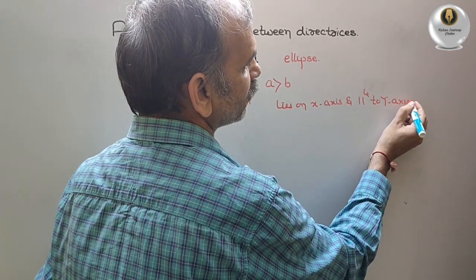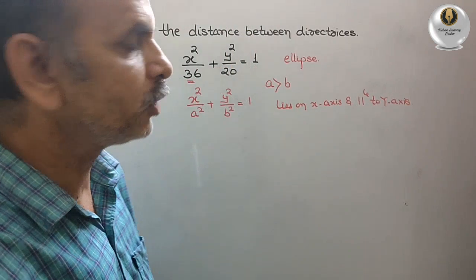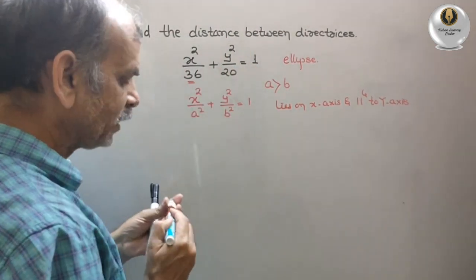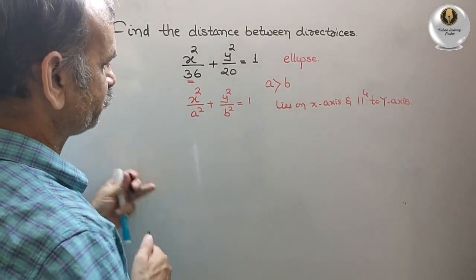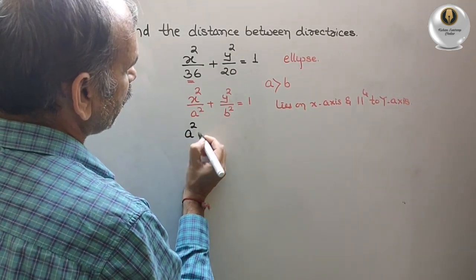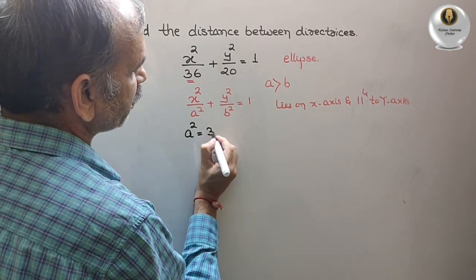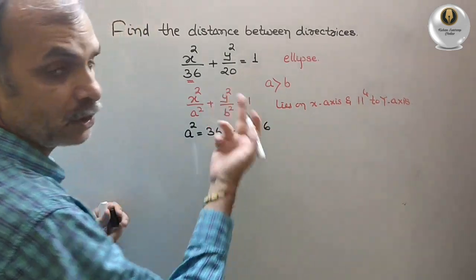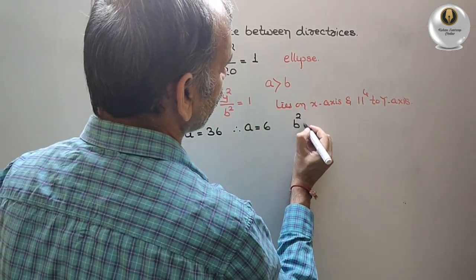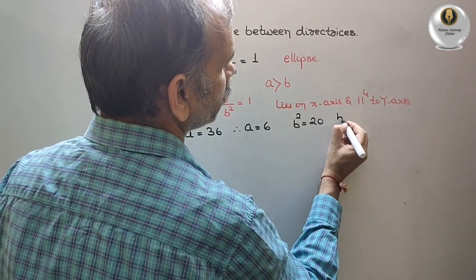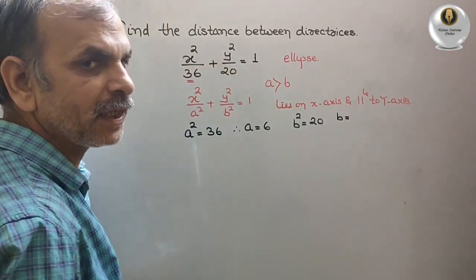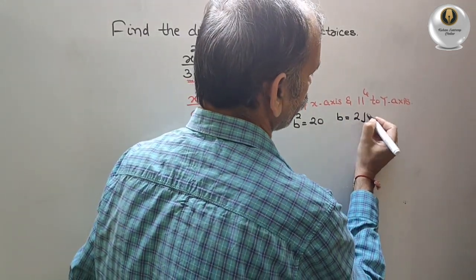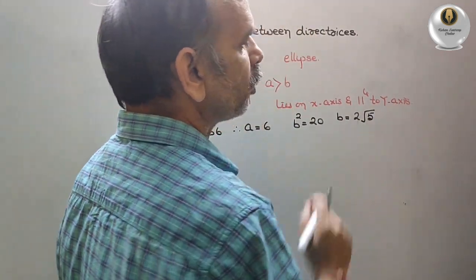Here, if you see, a is 6. We know that a² = 36, therefore a = 6. Here you can see b² = 20, so b = 2√5.